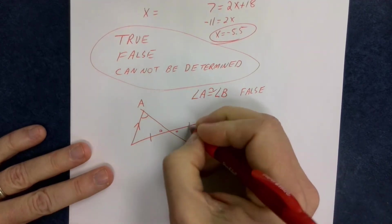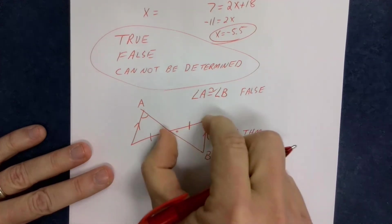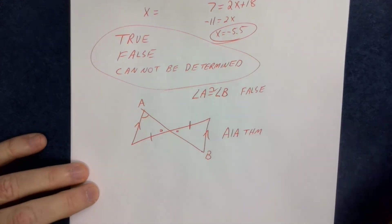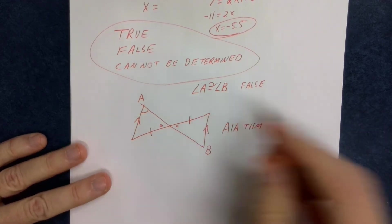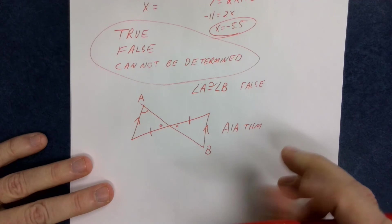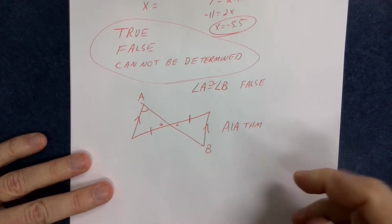And if these two things were marked, and I said, well, why is this segment congruent to this segment? You would simply say, well, that's because it's given. Given. Okay? So there's going to be a bunch of ones like that where you just have to be able to tell me what the theorem, postulate, property, definition is.